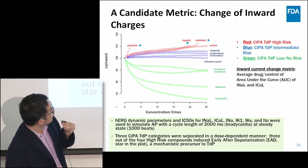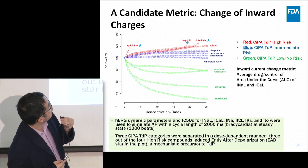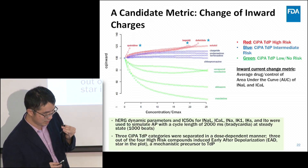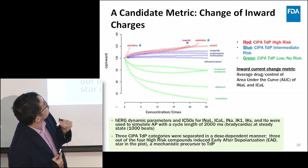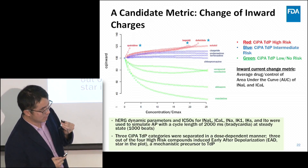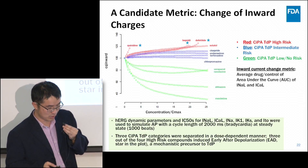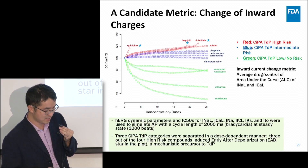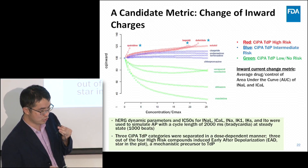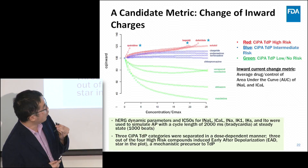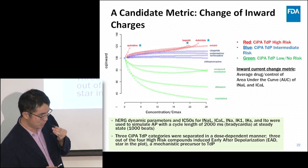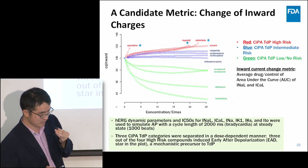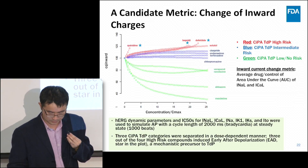More importantly, three out of the four high-risk drugs induce early afterdepolarizations (EADs), labeled by stars. As noted earlier, EAD is a mechanistic precursor to TdP. This suggests that our metric has a direct relationship with the mechanisms behind TdP.